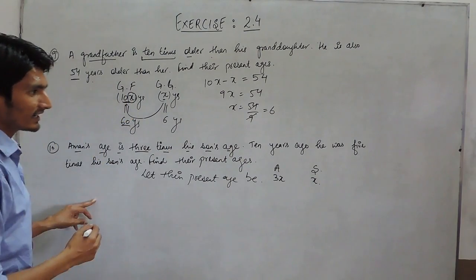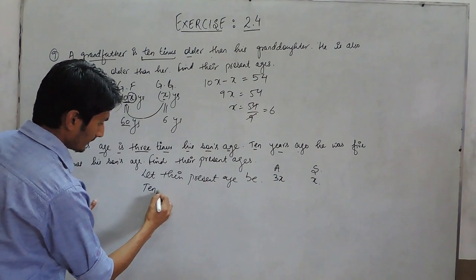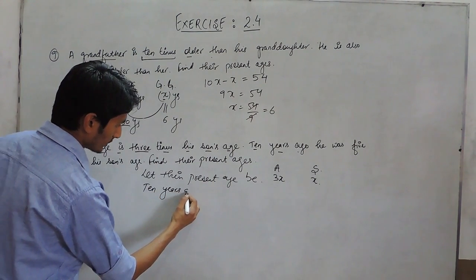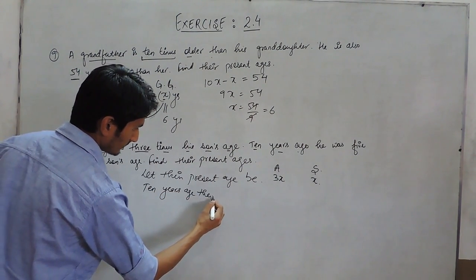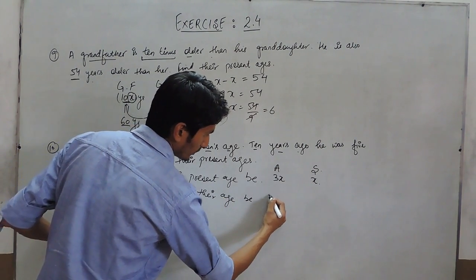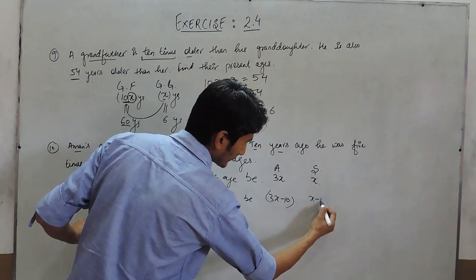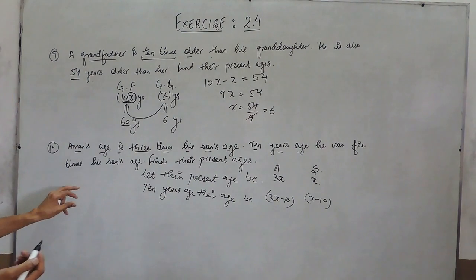In the second statement, it is given that 10 years ago, their age must be 10 years less and he also be 10 years younger. And 10 years ago, he was 5 times his son's age.